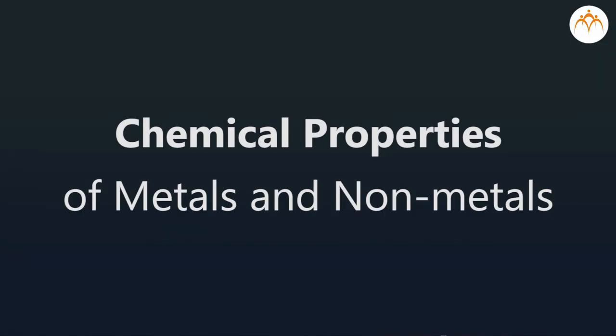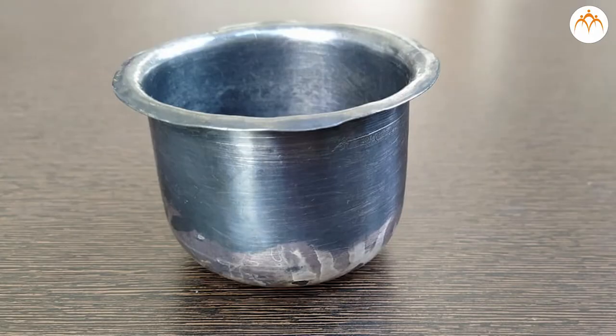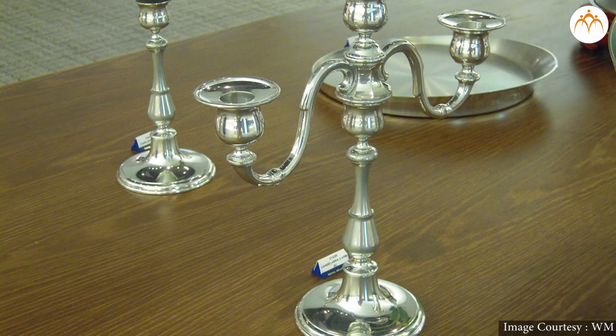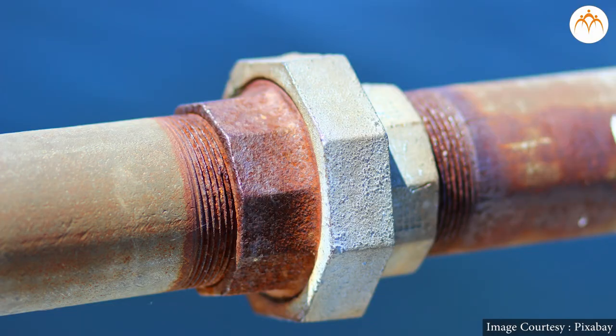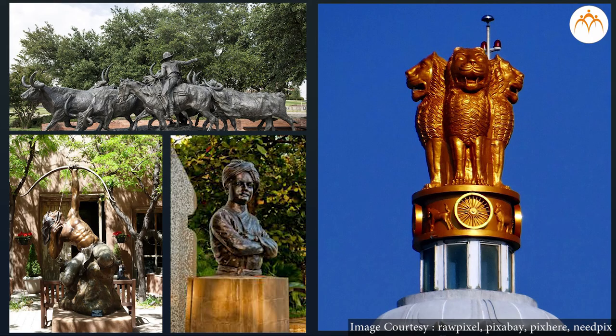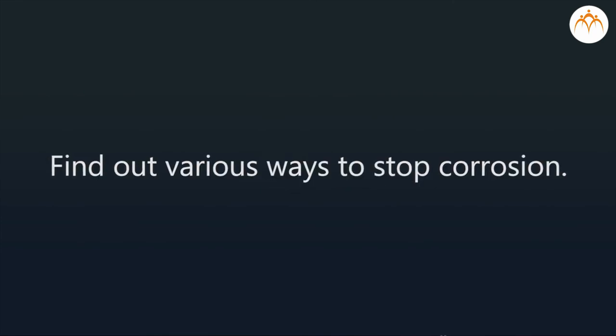In summary, in this video we discussed the chemical properties of metals and non-metals, reactions of metals and non-metals with oxygen, water, acids, and bases. We understood the effects of gases and moisture on metals, how metal compounds form due to corrosion, and the methods used to prevent corrosion. We also discussed alloys and their uses. Challenge: find out various processes to stop corrosion.